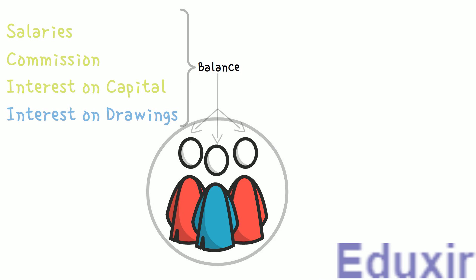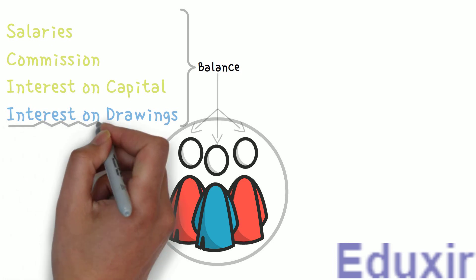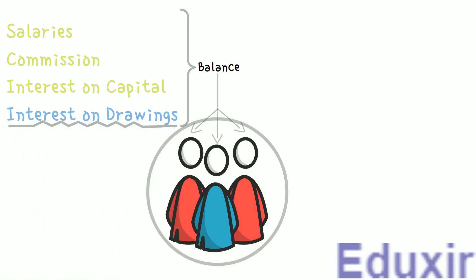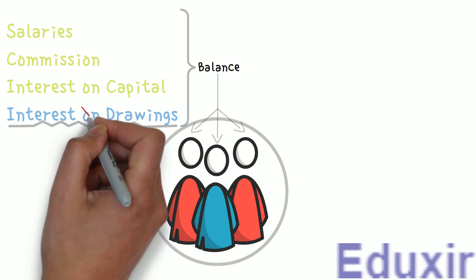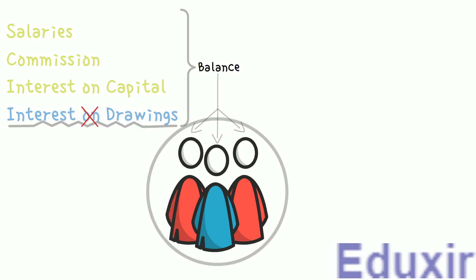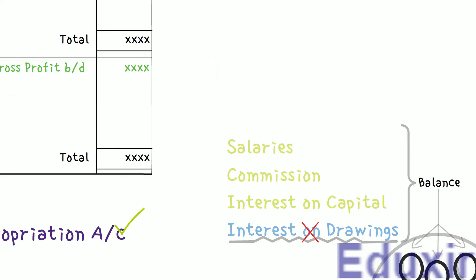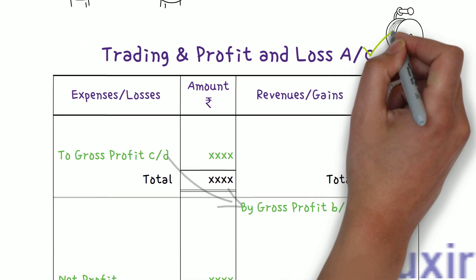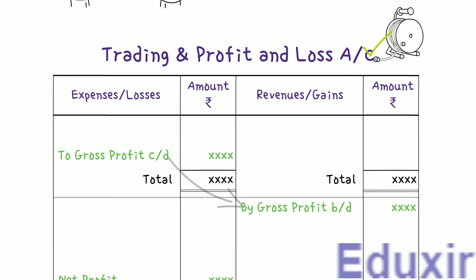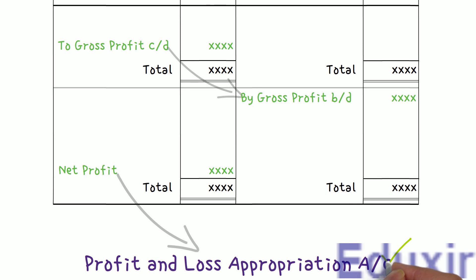So far we have been discussing the scenario in which there is a profit. In case there is a loss, the profit and loss appropriation account need not be prepared. However, if there are any drawings and interest is collected on them, we have to prepare the profit and loss appropriation account even if there is a loss. Otherwise, if there is no interest on drawings, the losses can be directly adjusted from the profit and loss account itself.